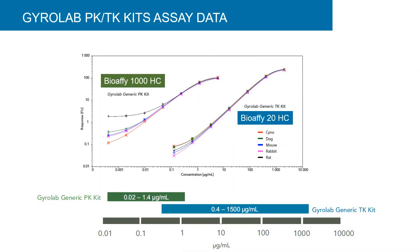These data demonstrate the uniformity of results across different preclinical animal matrices of cynomolgus monkey, dog, mouse, rabbit, and rat. The PK immunoassay dynamic range is from 0.02 to 1.4 micrograms per mL, and the TK immunoassay has a dynamic range of 0.4 to 1500 micrograms per mL for the higher biotherapeutic doses used in toxicology studies.